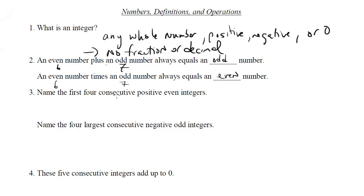Name the first 4 consecutive positive even integers. Okay, so we want the first 4 consecutive, so in order, positive, so greater than 0, evens. So first let's start out with the smallest positive even integer and that will be 2, which means the next must be 4, 6, and then 8.